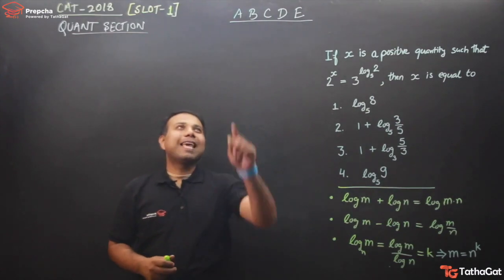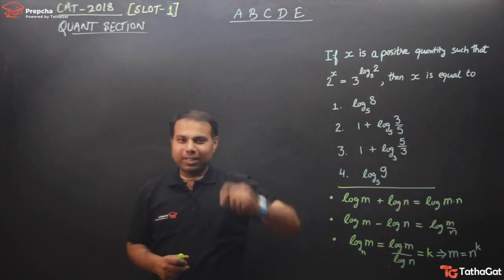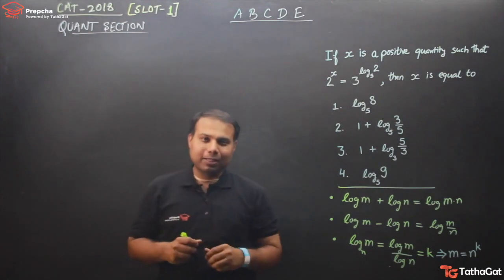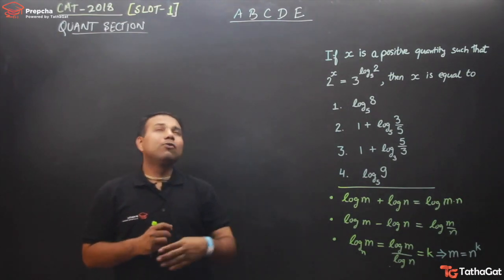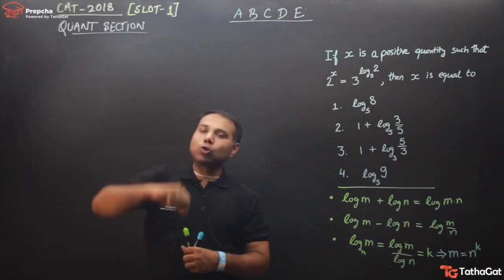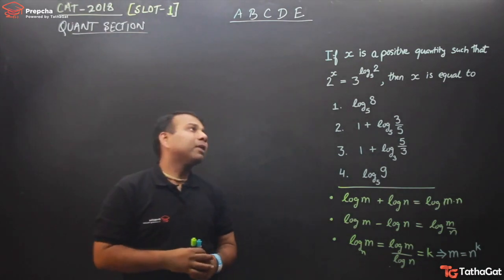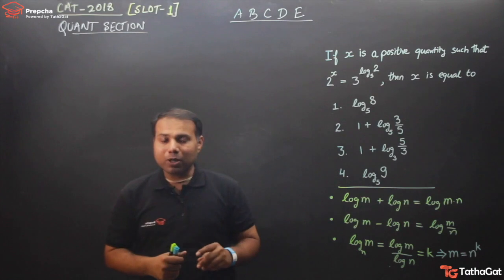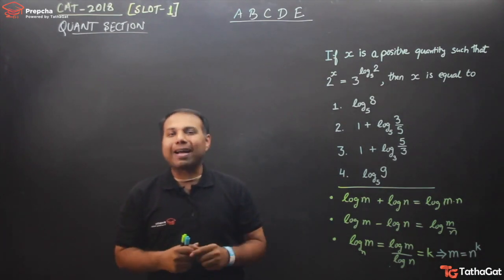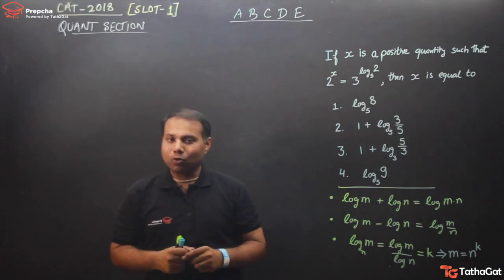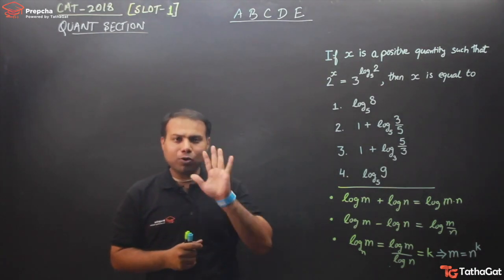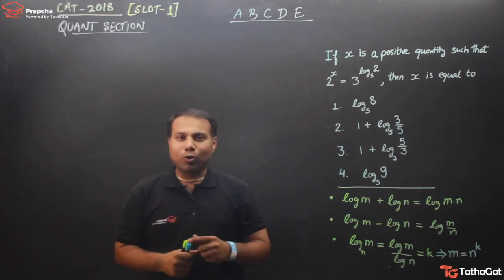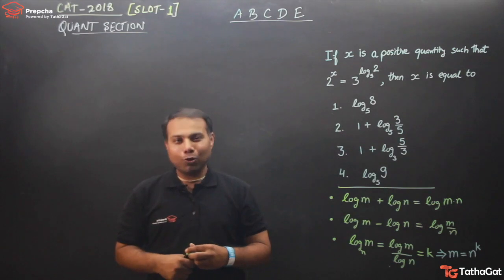Hi, welcome to this ABCDE series in which we are going to solve CAT questions of previous years. Here before you is a question from CAT 2018 slot 1, the quant section. There were 3 questions based on logarithm in slot 1 of CAT 18. I highly recommend you to pause the video or take a screenshot and solve this question on your own. After that, we will move to the solution part.